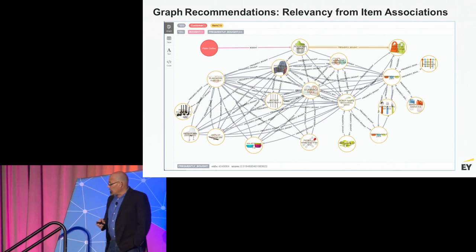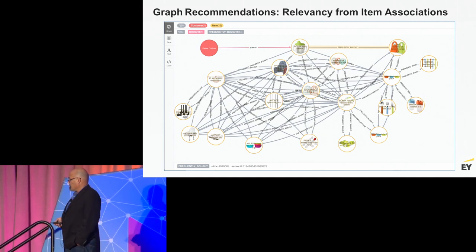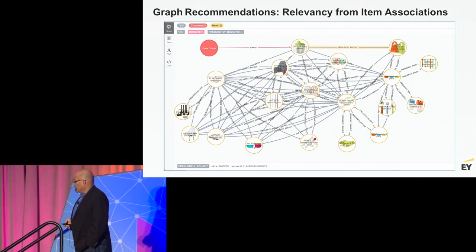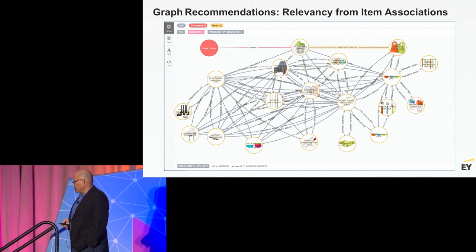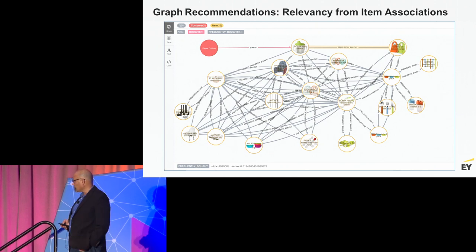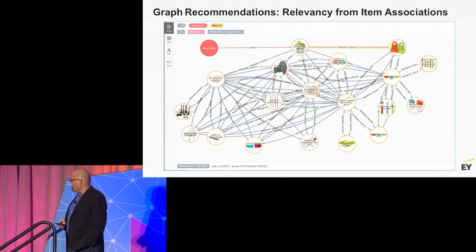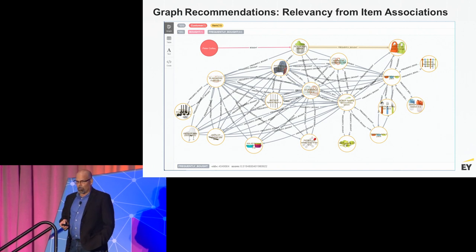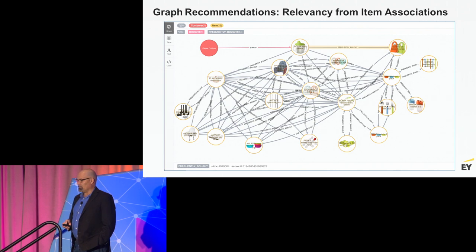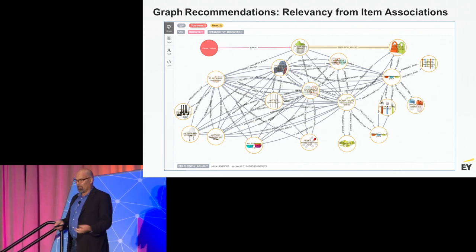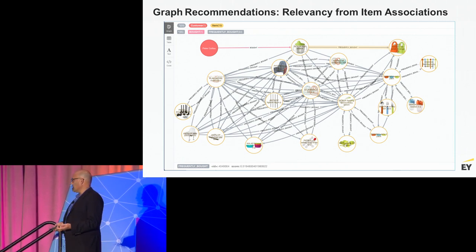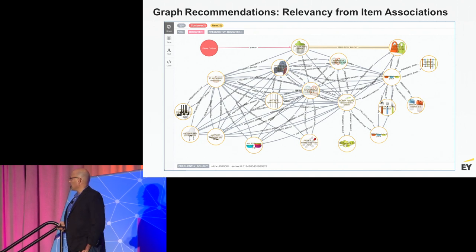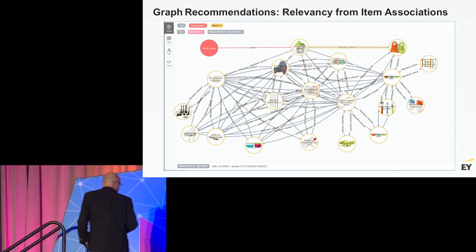Once you've got your customer 360 view in place, you can build recommendation engines and do other advanced graph analytics. Here's an example of an analytical graph built on top of a customer 360 graph — all these are product nodes, and the co-purchasing probability for every pair of products has been computed in the graph. There are thousands of products, and pairwise calculations for every possible combination look at the frequency that two items are bought together in the same basket.